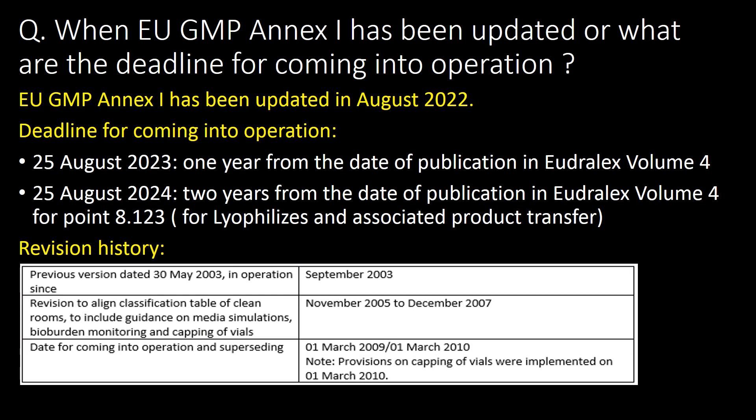When was UGMP Annex 1 updated and what are the deadlines for coming into operation? UGMP Annex 1 was updated in August 2022. The content of UGMP Annex 1 came into operation from 25th August 2023.